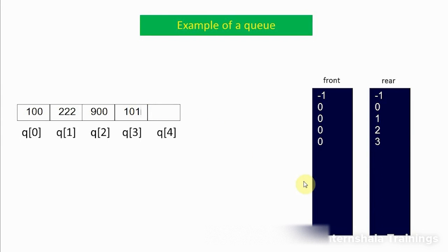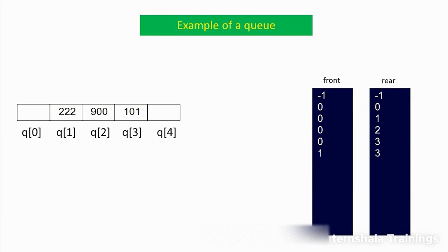Now suppose I want to remove an element. As mentioned, whenever we remove an element it is removed only from the front. So the element at queue[0] is removed. After removal, the value of front is incremented by 1 — it becomes 1 — and the value of rear remains unaffected. This is how the process in a queue takes place.